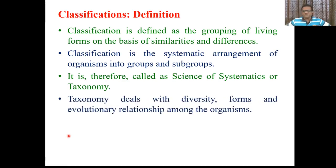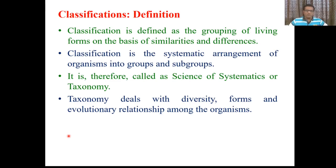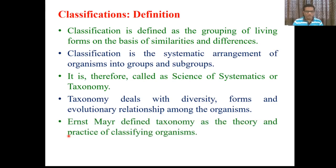Classification is the science of systematics and therefore it is a branch of taxonomy. Taxonomy is defined as the branch of biology which deals with identification, nomenclature and classification. Taxonomy deals with the diversity of forms and evolutionary relationships among organisms. According to Ernst Mayr, taxonomy is the theory and practice of classifying organisms.